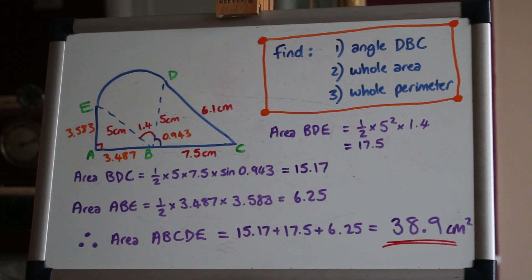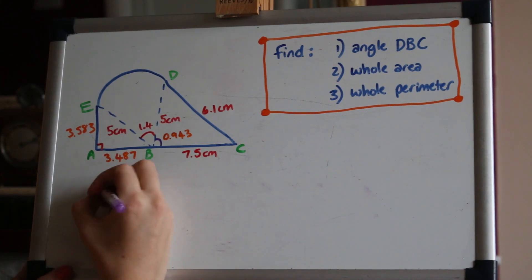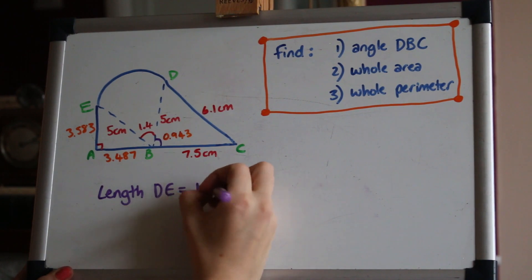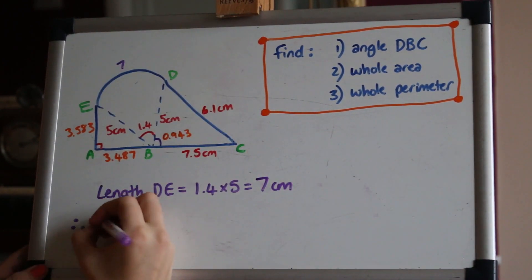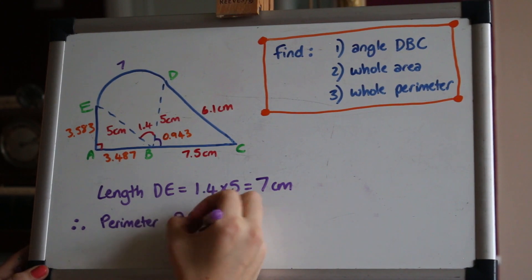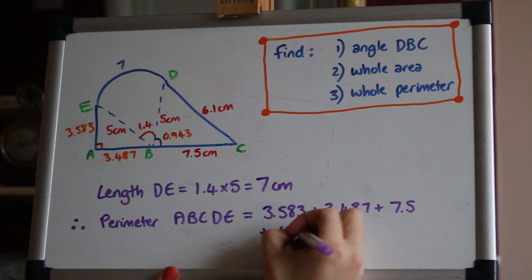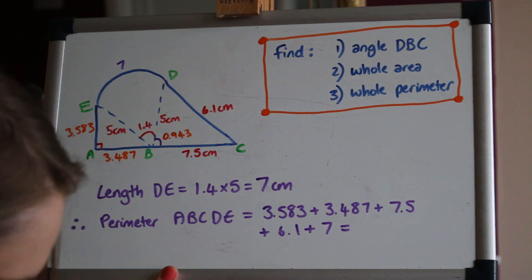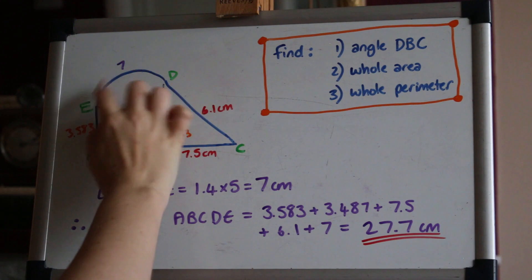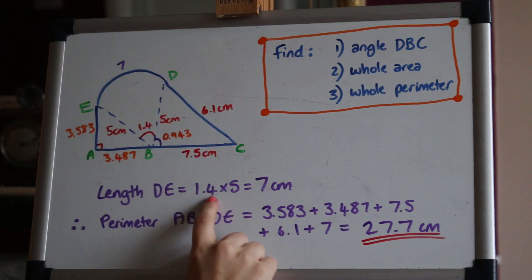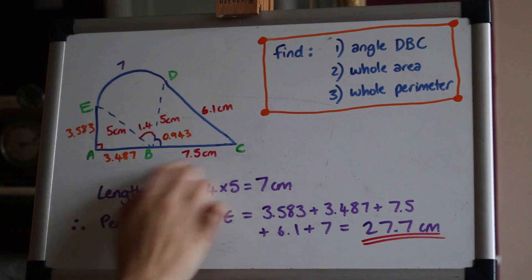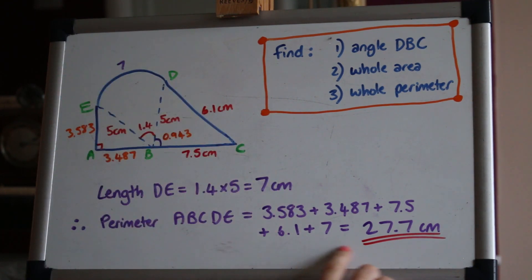Now to find the whole perimeter that should be relatively straightforward see if you can have a go. Okay so I found the length of the arc DE using the angle times the radius to get seven centimeters and then the whole perimeter is adding up all those lengths around the outside of the shape to get 27.7 centimeters.